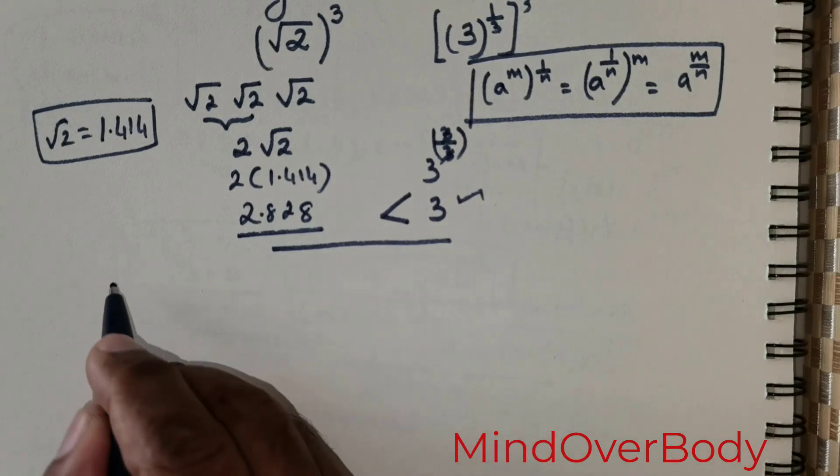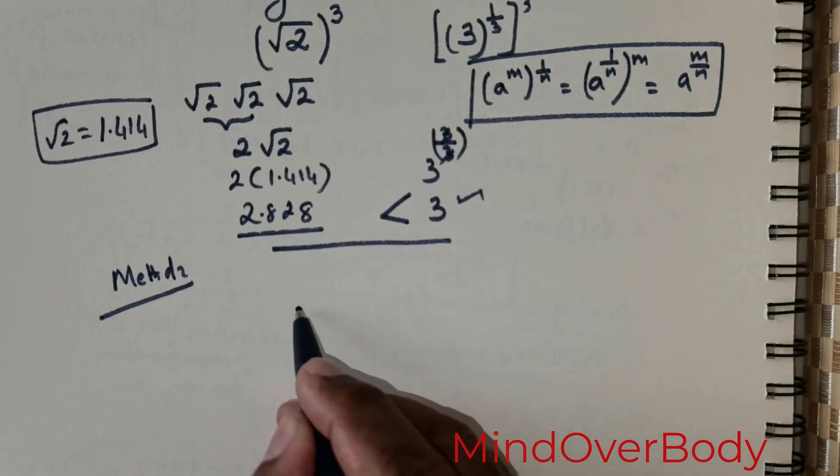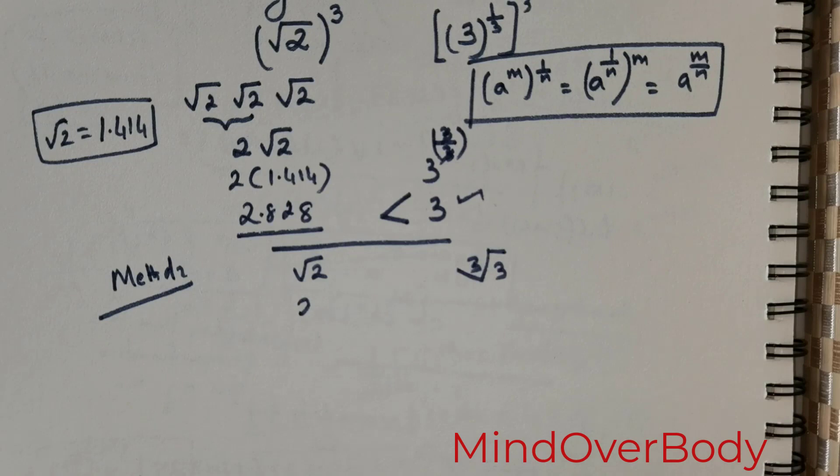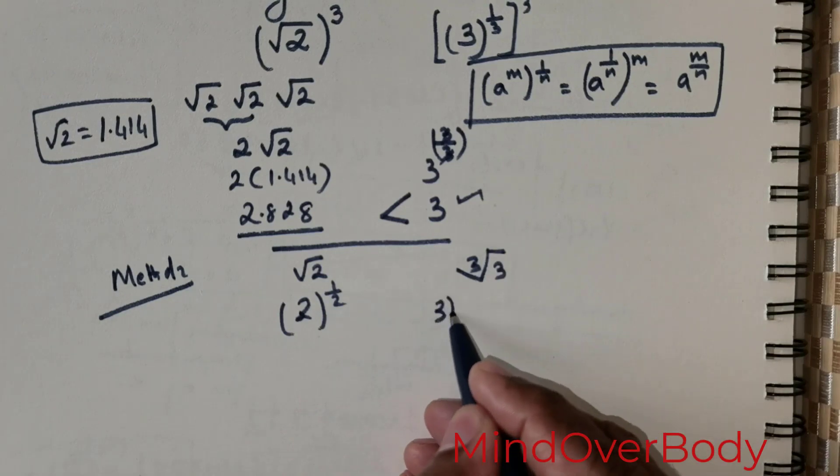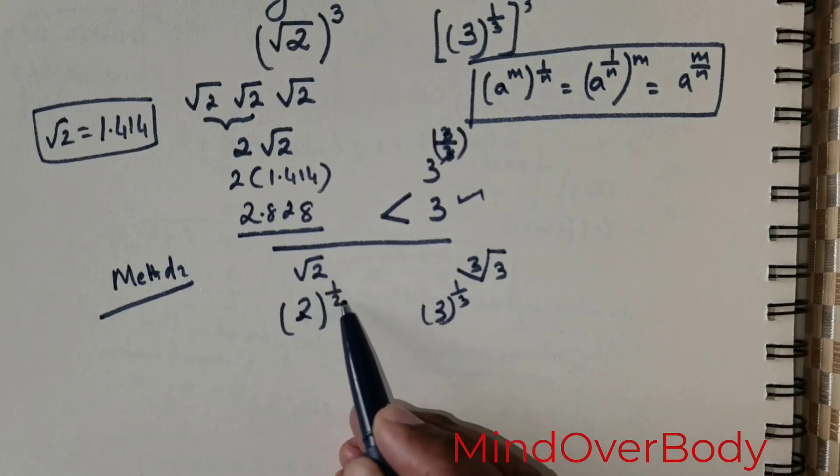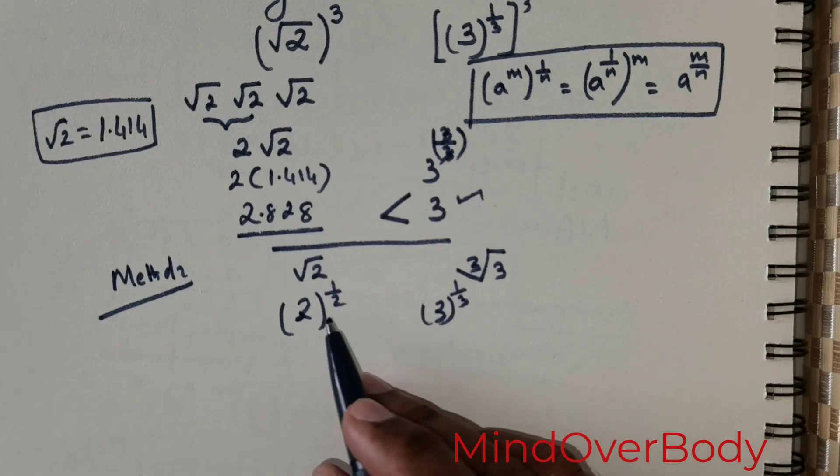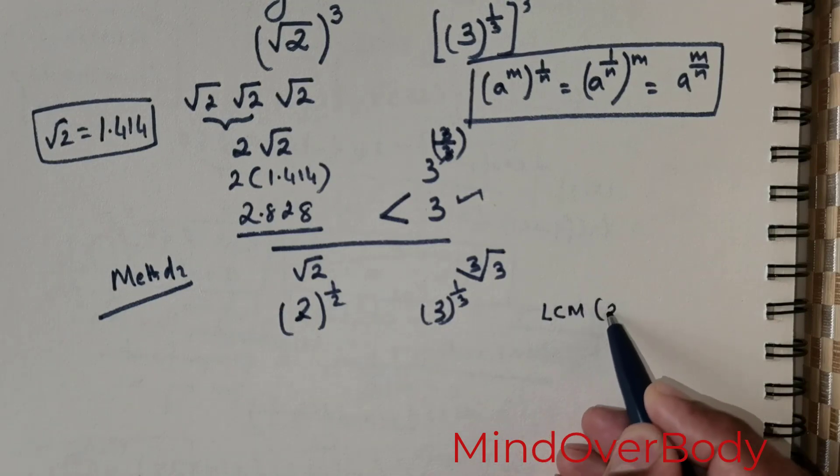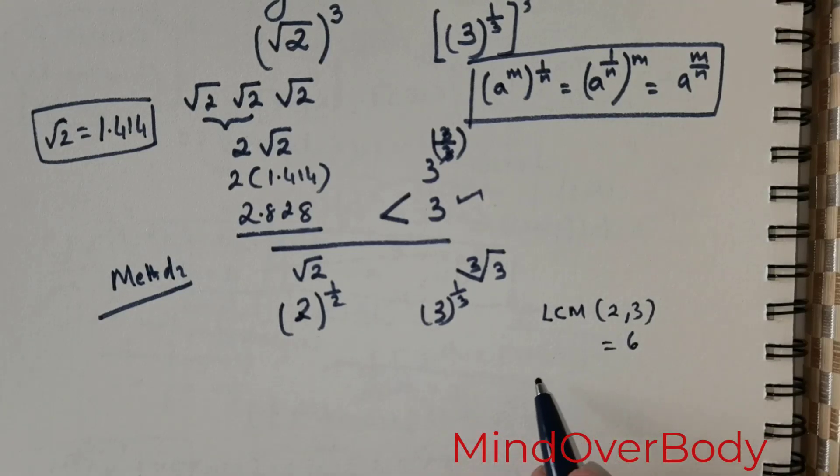So moving on, let us see how to solve the second way. This is method 2. Let me rewrite the question. Root of 2 and third root of 3. Now write root 2 as 2 raised to the power 1 over 2, and write third root of 3 as 3 raised to the power 1 over 3. Now my intention is to rewrite 1 over 2 and 1 over 3 in a manner that I have got something common as an exponent for both these quantities. The only way that is possible first is to obtain the LCM of the number 2 with 3. Naturally the LCM of 2 and 3 is going to be 6.